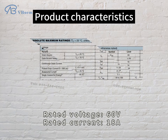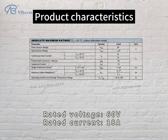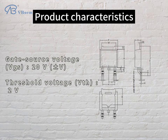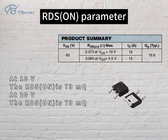Product characteristics: Rated Voltage 60V, Rated Current 18A, Gate-Source Voltage VGS ±20V, Threshold Voltage VTH 2V, RDS-ON parameter — at 10V gate drive the RDS-ON is 73mΩ.